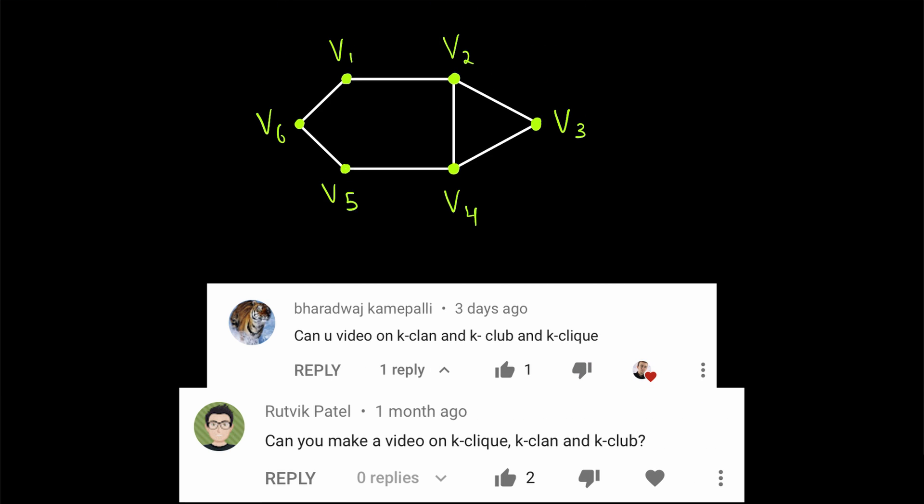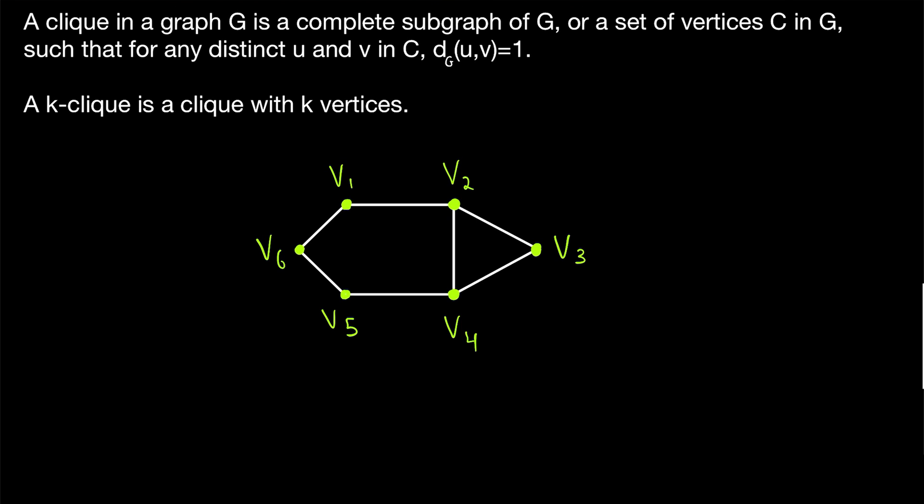This is a viewer requested video, I always appreciate those viewer requests, so be sure to leave yours down in the comments. Recall that a click in a graph G is a complete subgraph of G, or we may also use the word click to refer to a set of vertices C in G, such that any two vertices in C that are distinct have a distance of one between them, which means they are adjacent. A k-click is a click with k vertices, simple as that.